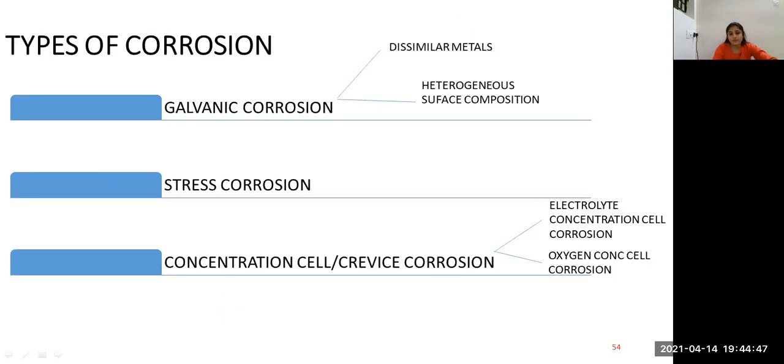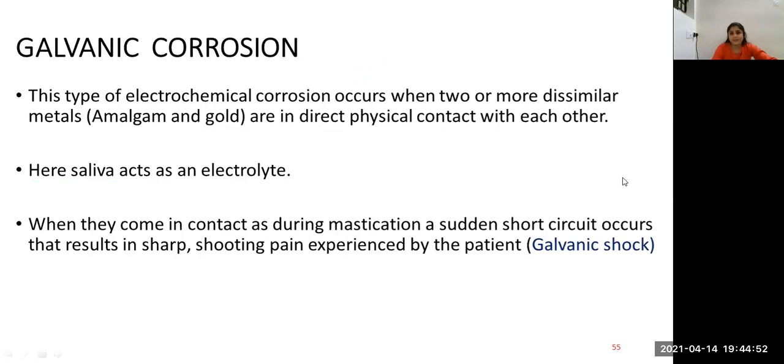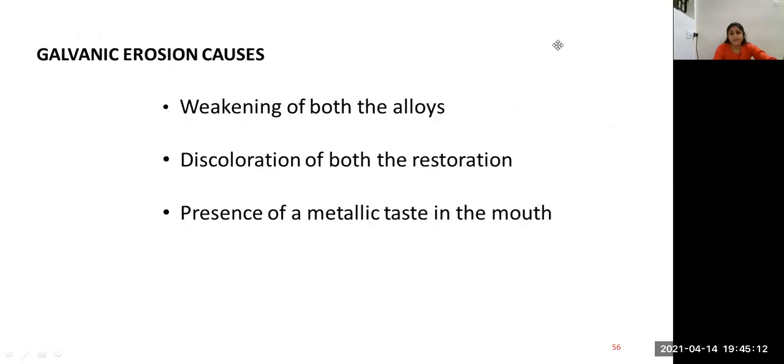Types of corrosion are galvanic corrosion, stress corrosion, and concentration cell corrosion. Under galvanic corrosion, this type of electrochemical corrosion occurs when two or more dissimilar metals are in direct contact with each other. Here, saliva acts as electrolyte. When they come in contact as during mastication, a sudden short circuit occurs that results in a sharp shooting pain experienced by the patient, which is called galvanic shock. Galvanic corrosion causes weakening of both the alloys, discoloration of both the restorations, and presence of metallic taste in the mouth.